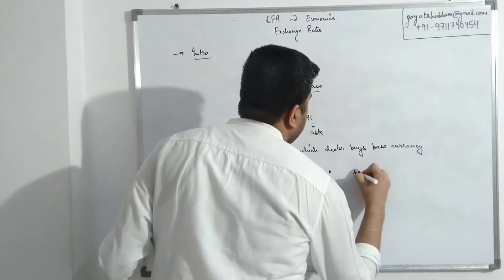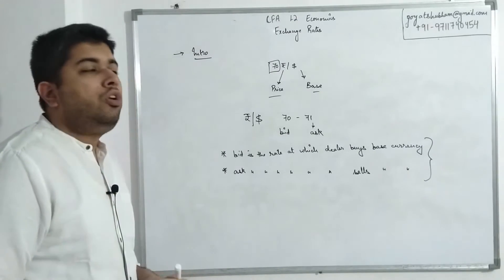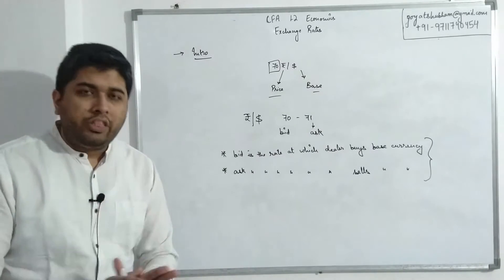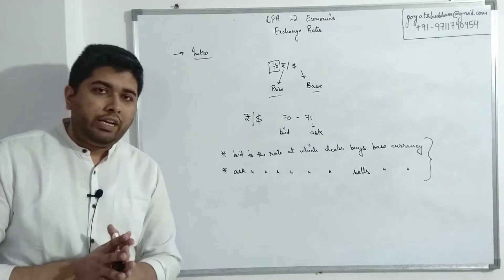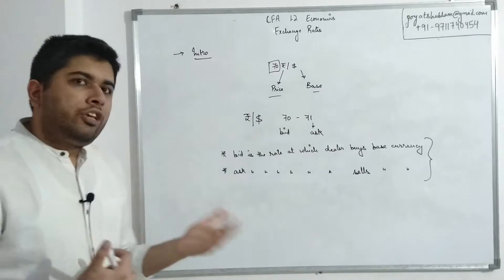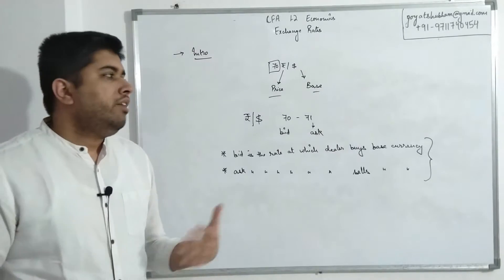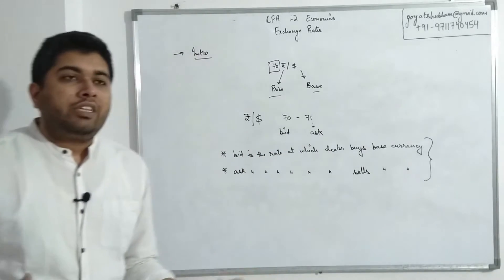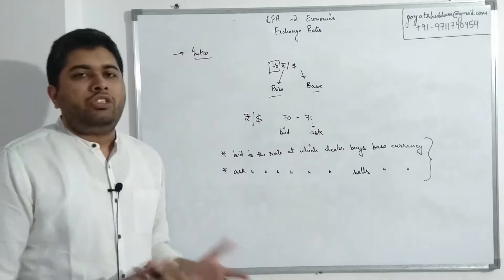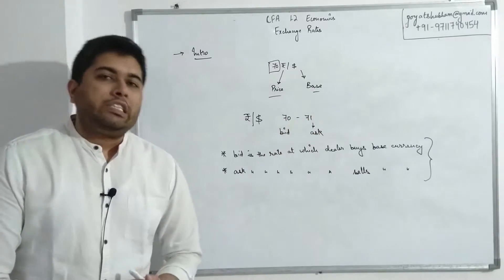The golden rule is: bid is the rate at which the dealer buys the base currency, and ask is the rate at which the dealer sells the base currency. If you remember this rule, not a single calculation in this chapter will be complicated. Nothing in this chapter is complicated — it just looks complicated because you're being introduced to this kind of calculation for the first time. The most challenging part is understanding how to use two rates instead of one, not the calculation logic itself.